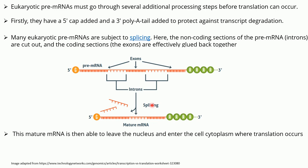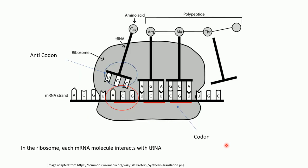After splicing, we have mature messenger RNA with a five prime cap and three prime poly-A tail. This mature messenger RNA is then able to leave the nucleus and enter the cytoplasm, where translation occurs — specifically in the ribosome.